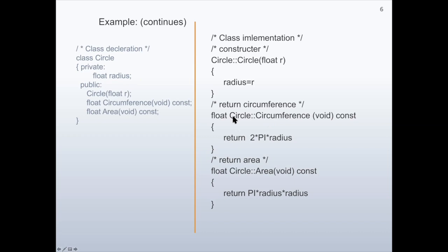The method circumference is constant because we have a private data member radius, and inside the method that data member is not going to be changed. There is no input because the radius used here is already a data member of the object. So 2 times pi multiplied by radius is calculated and returned as a floating value. Similarly for the method area — it is a constant method because the data member is not going to be changed, and it returns a floating value of pi times radius times radius.